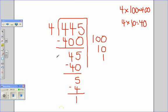I've got 1 item left and I have 4 groups, so I can't pass out another to each group. That is my remainder. I passed out a total of 111 with a remainder of 1.